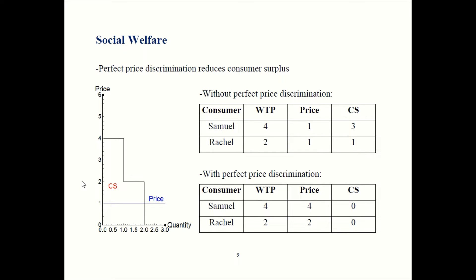Let's look at what this would imply for welfare. Perfect price discrimination is going to reduce consumer surplus. I'm bringing back this example from an earlier chapter where consumer surplus was introduced for the first time, keeping things simple with two consumers: Samuel and Rachel. We use WTP as an abbreviation for willingness to pay — the very most you'd pay to get this good — and CS for consumer surplus. In the first table and graph, we're looking at when there is no price discrimination, so everyone pays the same price of $1. Samuel thinks this good is worth $4, so he'd pay up to $4 to get it, but he only had to pay $1, meaning his consumer surplus is $3.